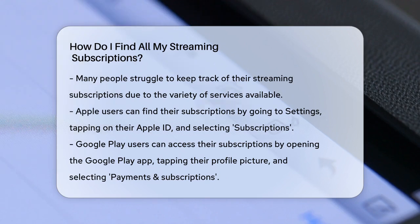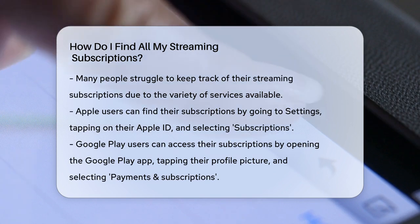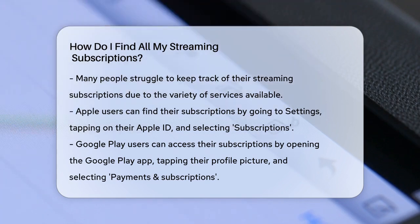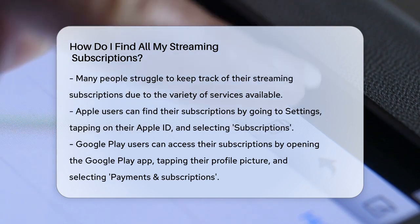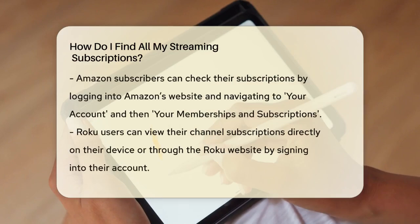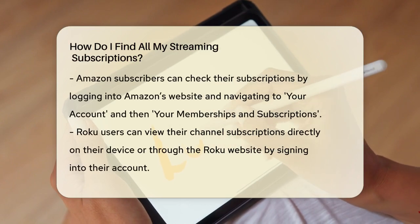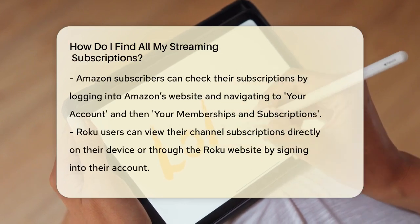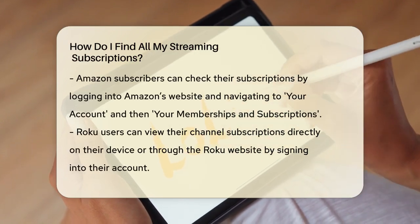If you're using Google Play, open the Google Play app, tap your profile picture in the upper right corner, choose Payments and Subscriptions, and then tap Subscriptions. This will show you all the services you've subscribed to via Google Play.